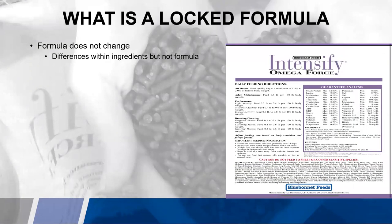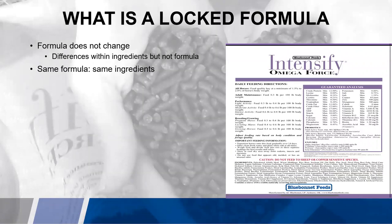This is an example of one of the Bluebonnet Feeds Intensify products that is a locked formula. Given that this formula is an open label, you can see these ingredients for their true names. Looking at this tag on the right, you see dehydrated alfalfa meal, wheat midds, rice bran — those you see for their true name. So you know it's going to be the same formula with those same ingredients.